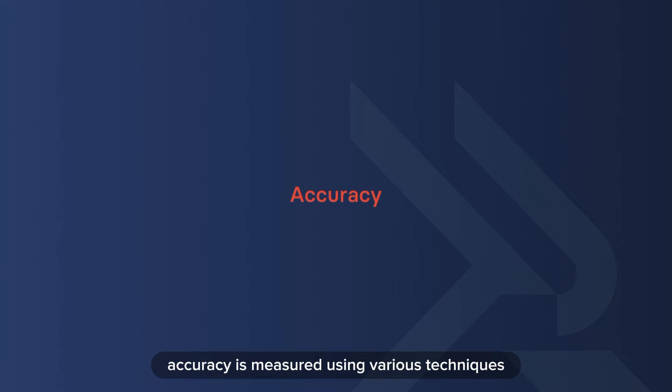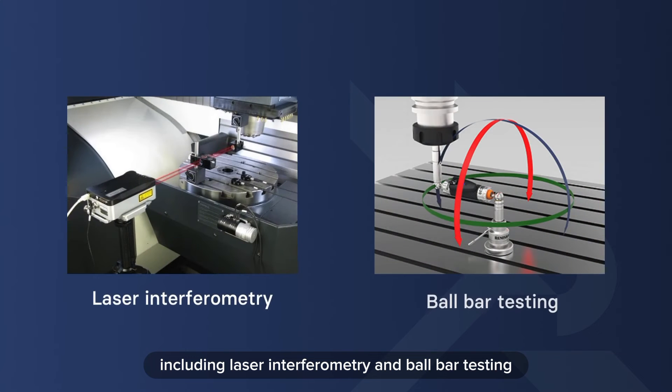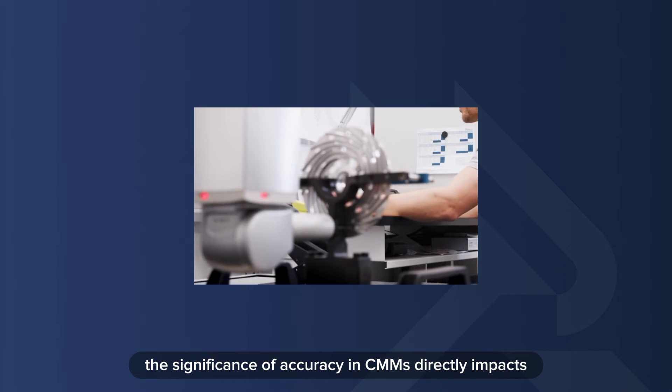Accuracy is measured using various techniques, including laser interferometry and ball bar testing. These methods help calibrate the CMM and ensure it performs within specified tolerances.